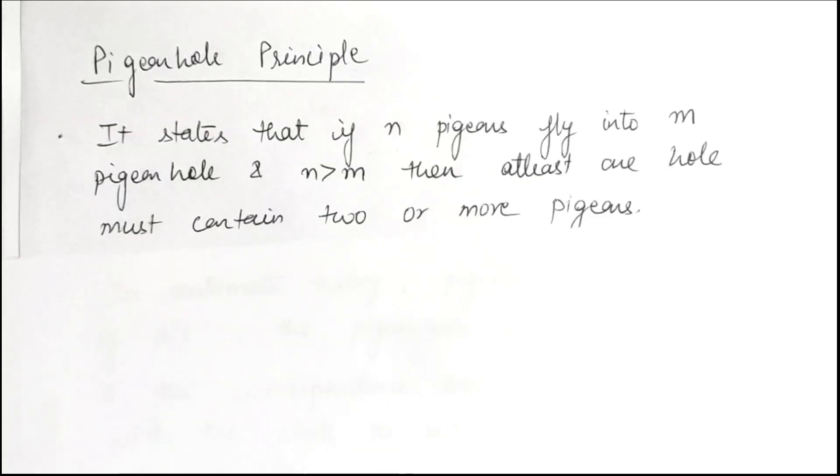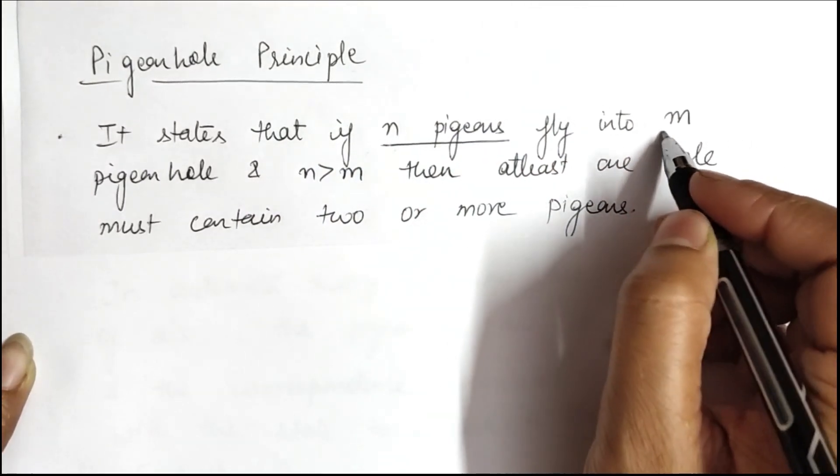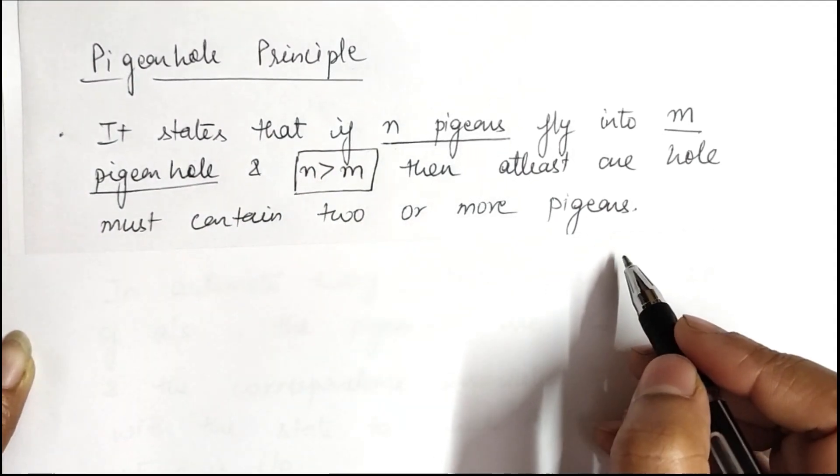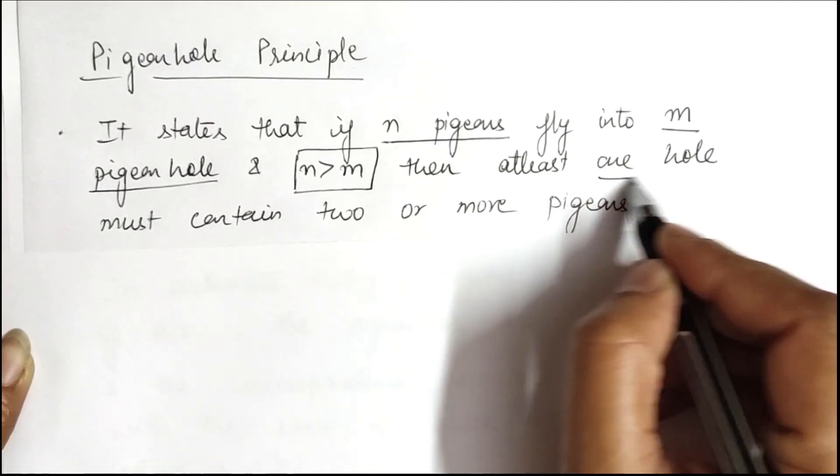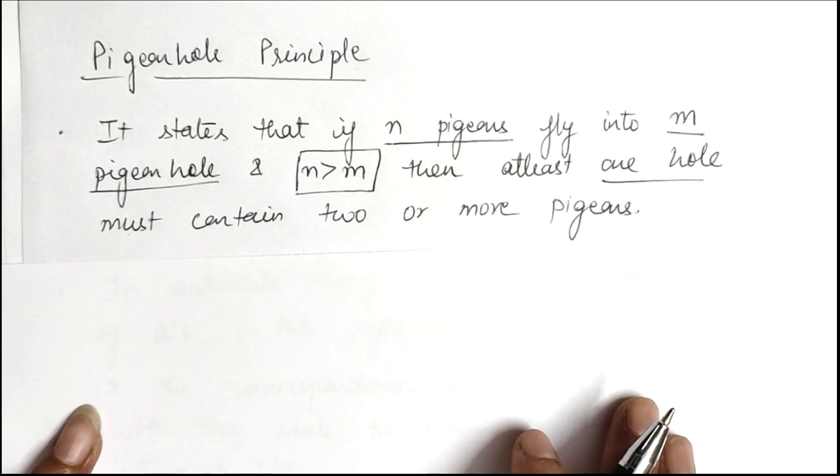Hello friends, the next topic is pigeonhole principle. This principle is also applicable in discrete mathematics, which states that if we have n pigeons fly into m pigeonholes where n is greater than m, then at least one pigeonhole must contain two or more pigeons.